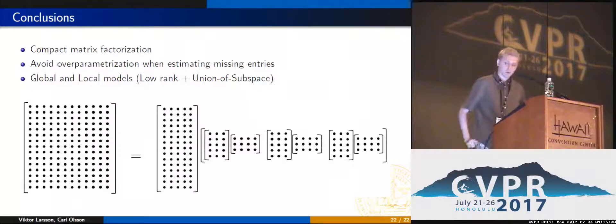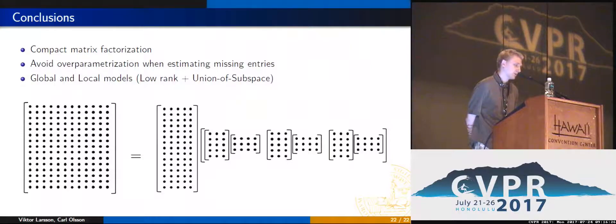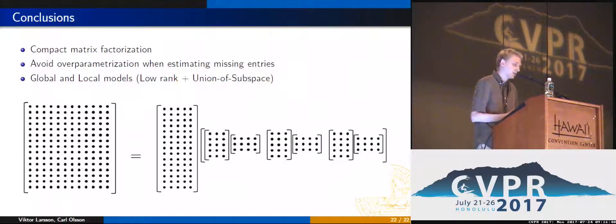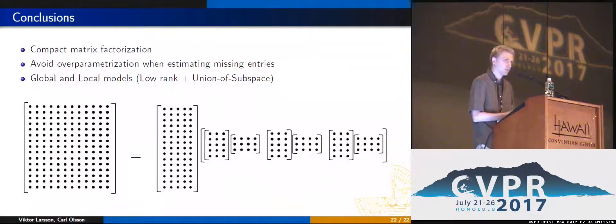In conclusion, we have presented a framework for compact matrix factorization. The idea was to avoid the over-parameterization which can sometimes happen when estimating low-rank matrices from partial observations, by adding additional union of subspace constraints to regularize the problem. Thank you.